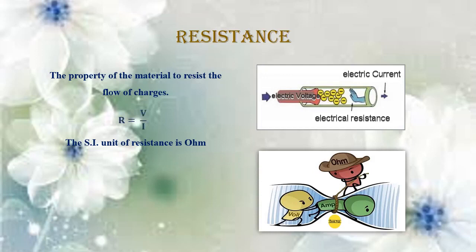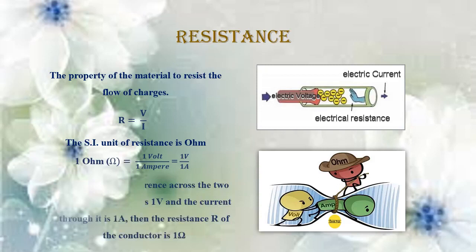Resistance is given by the relation R = V/I. The SI unit of resistance is the Ohm, and 1 Ohm = 1 Volt / 1 Ampere. It is defined as: if the potential difference across the two ends of a conductor is 1 Volt and the current through it is 1 Ampere, then the resistance R of the conductor is 1 Ohm.